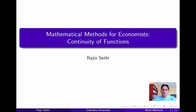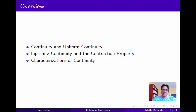This segment is concerned with the continuity of functions, and we'll deal with the continuity of correspondences later in the course. Now there are lots of different notions of continuity, but they all basically express the idea that two points that are close together in the domain of a function should have images in the co-domain that are also close together in some well-defined sense.